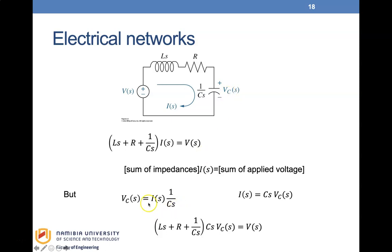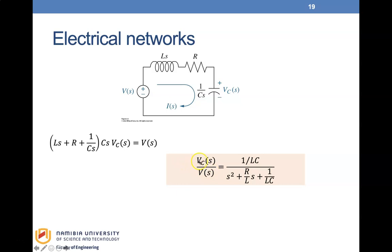We know that Vc(s) = I(s)·(1/Cs), so I(s) = Cs·Vc(s). Substituting this into the impedance equation introduces Vc directly. From the resulting equation, the transfer function Vc(s)/V(s) equals 1/LC divided by (s² + (R/L)s + 1/LC), the same result as before. This approach is more straightforward because you simply transform the circuit to the frequency domain and proceed directly.